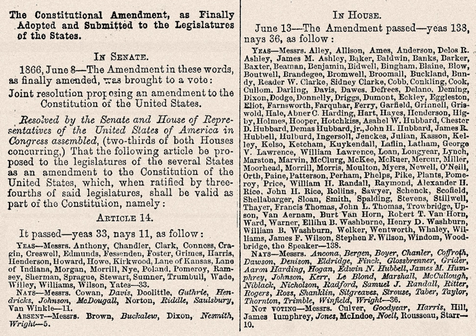Section 4 confirmed the legitimacy of all public debt appropriated by the Congress. It also confirmed that neither the United States nor any state would pay for the loss of slaves or debts that had been incurred by the Confederacy. For example, during the Civil War, several British and French banks had lent large sums of money to the Confederacy to support its war against the Union. In Perry v. United States, the Supreme Court ruled that under Section 4, voiding a United States bond went beyond Congressional power. The debt ceiling crises of 2011 and 2013 raised the question of what is the President's authority under Section 4.